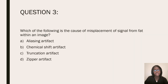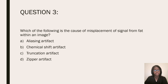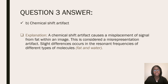Question three: which of the following is the cause of misplacement of signal from fat within an image? Aliasing artifact, chemical shift artifact, truncation artifact, or zipper artifact? Chemical shift artifact is the answer. A chemical shift artifact causes a misplacement of signal from fat within an image. This is considered a misrepresentation artifact. Slight differences occur in the resonating frequencies of different types of molecules such as fat and water.